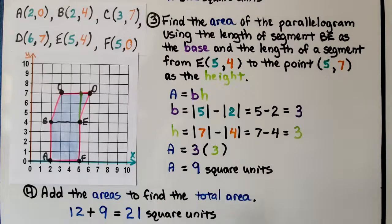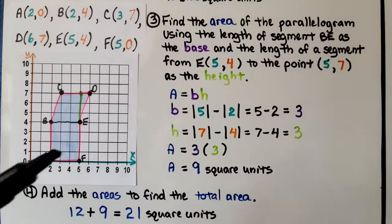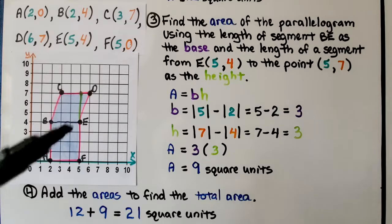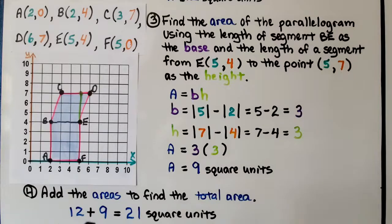The last step, step four, is to add the areas to find the total area of this composite figure. We have 12 plus 9, which equals 21 square units.